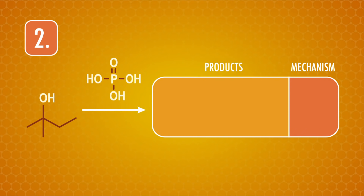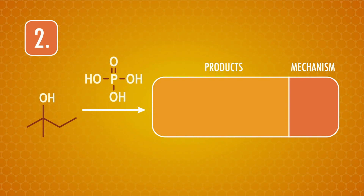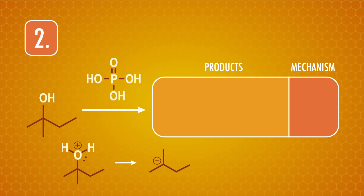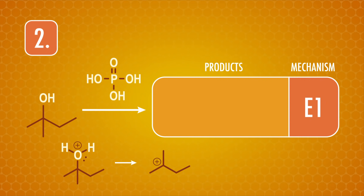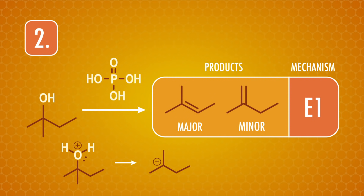Here's problem number two! This time we have a tertiary alcohol and phosphoric acid. Like our dehydration of ethanol reaction, the phosphoric acid loses a proton to the alcohol group. Then the water leaves to form a carbocation. Unlike with ethanol, the tertiary carbocation that forms on the alpha carbon is fairly stable, so an E1 mechanism is favored. However, there are two possible products: a major one with a more substituted double bond per Zaitsev's rule, and a minor one where the double bond is less substituted.